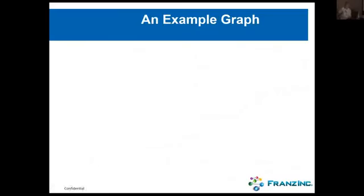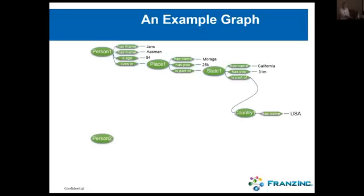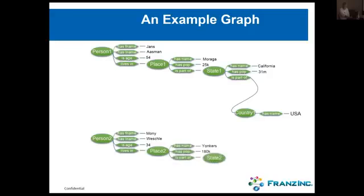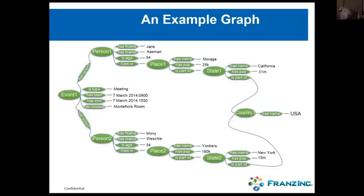Most of you know what a graph is. When I talk to people who don't, I say: let's represent a person — the name Jans Aasman, age 57, lives in Moraga, which is part of California, which is part of the USA. There's another person living in Yonkers, New York. These two people were recently at an event at a particular date and place. So in the graph I describe two people from various places who met each other. Everyone sees that this is a graph.